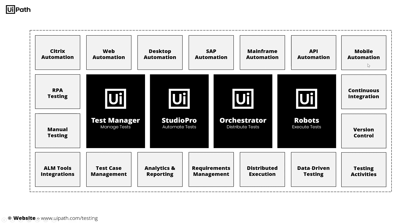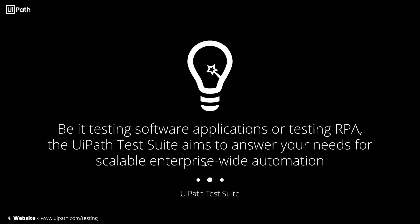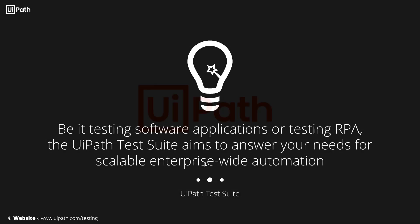But the UiPath test suite is so much more than that — so much more than automation. It provides CI/CD integration as well as version control capabilities. The UiPath test suite comes with pre-built testing activities, data-driven testing, distributed execution, and a variety of test management capabilities, such as manual testing, analytics and reporting, as well as requirements management. So be it testing software applications or testing RPA, the UiPath test suite aims to answer your needs for scalable enterprise-wide automation.